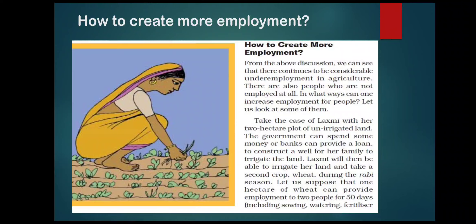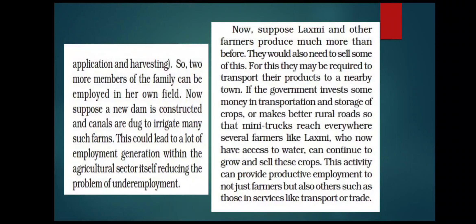Take the case of Laxmi with her two-hectare plot of unirrigated land. The government can spend some money, or a bank can provide a loan, to construct a well for her family to irrigate the land. Laxmi will then be able to take a second crop — wheat — during the Rabi season. One hectare of wheat can provide employment to two people for 50 days, including sowing, watering, fertilizer application, and harvesting. If a new dam is constructed and canals are dug to irrigate many such farms, this could lead to a lot of employment generation within the agricultural sector itself, reducing unemployment.